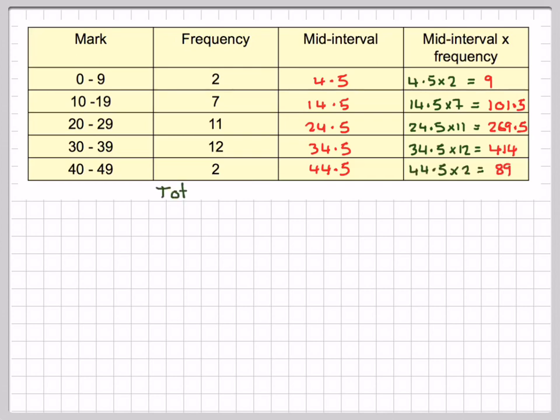Then we sum up the frequency: 2 plus 7 plus 11 plus 12 plus 2, which gives 34. And we sum up the mid-interval times frequency column: 9 plus 101.5 plus 269.5 plus 414 plus 89, which gives 883.